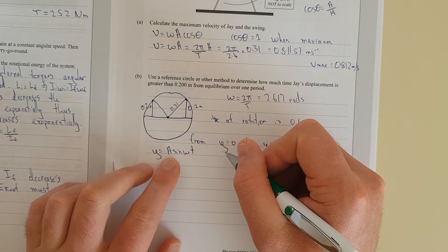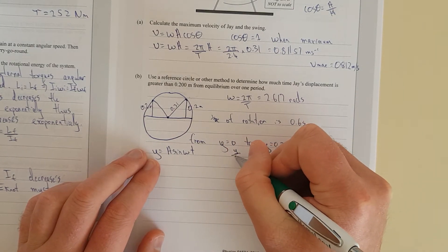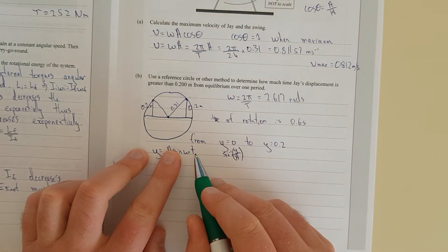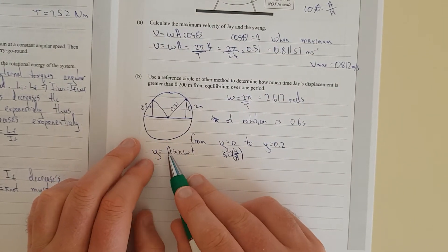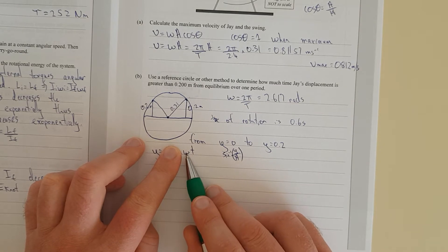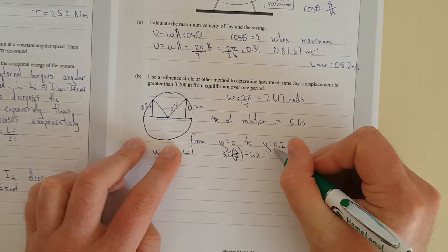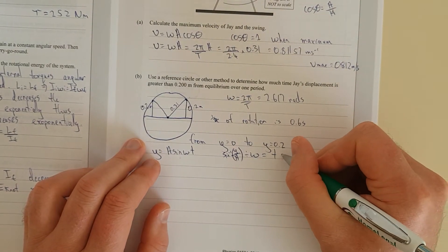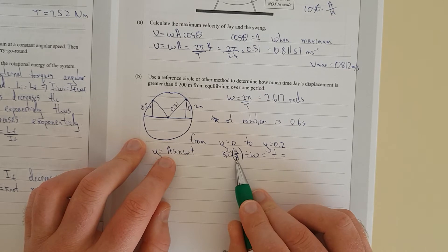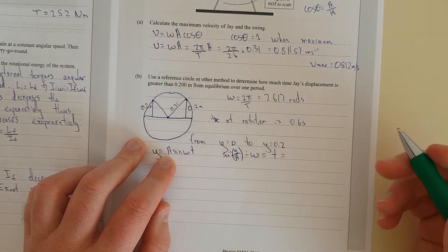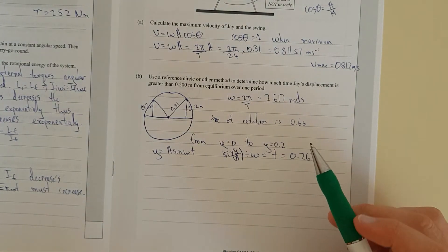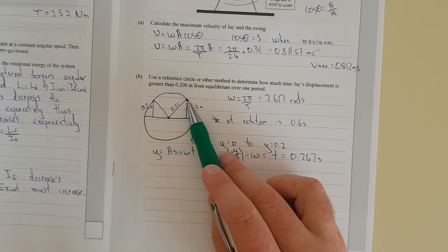So, I'm going to rearrange that. So, I'm going to have y divided by a. And then take the inverse of sine of both sides. Sine inverse. And that would have left me with just omega t. Takes sine inverse of both sides. Gets rid of that sine. And now I'm going to divide both sides by angular velocity. And that would just leave me with time. And then if you substitute in y is 0.2, amplitude is 0.31, angular velocity is 2.617. That'll give you 0.267 seconds. So, it's 0.267 seconds from equilibrium up to the 0.2 distance.